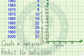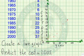In 1960 we have 4 cents; in 1965 we have 5. In 1970 we have 6. In 1975 we have 10. In 1980 we have 15. In 1985 we have 22. In 1990 we have 25. In 1995 we have 32. And in 2000 we have 37.